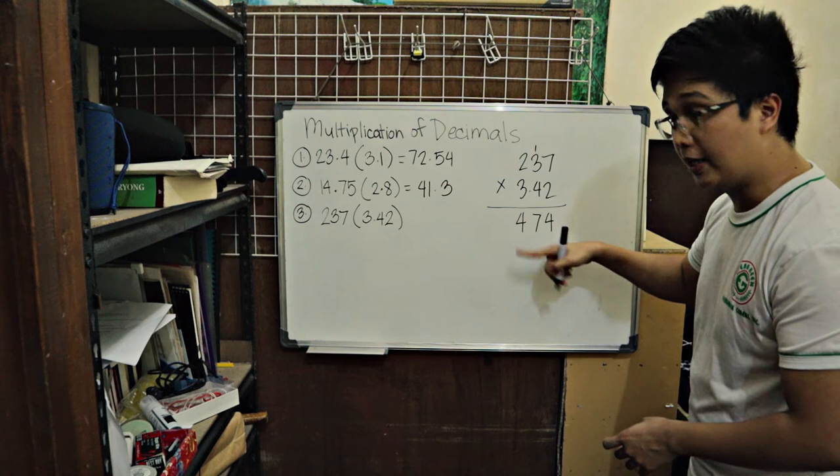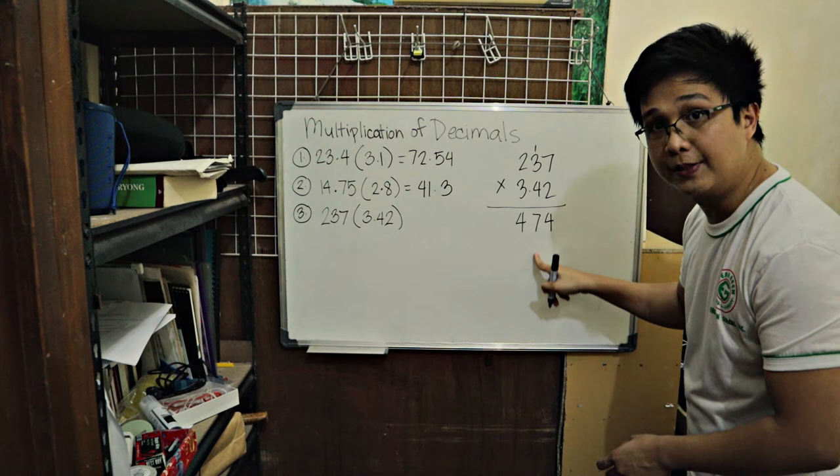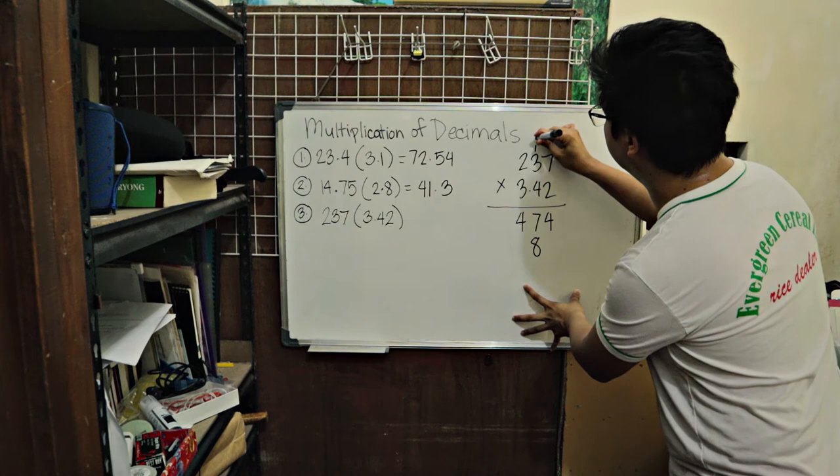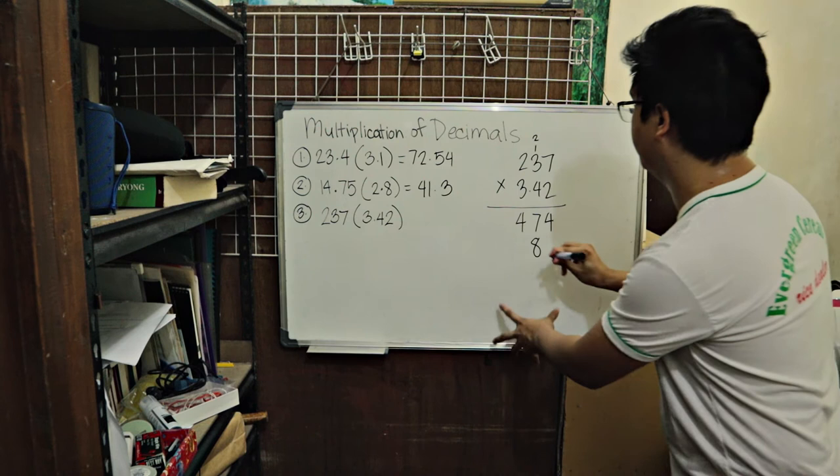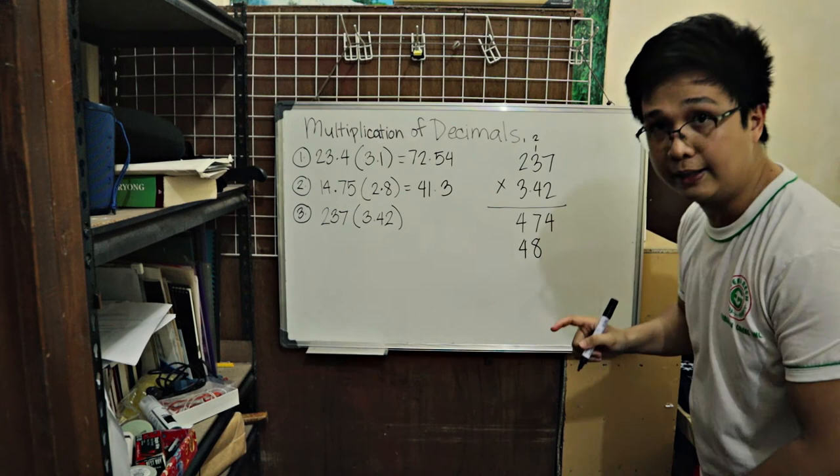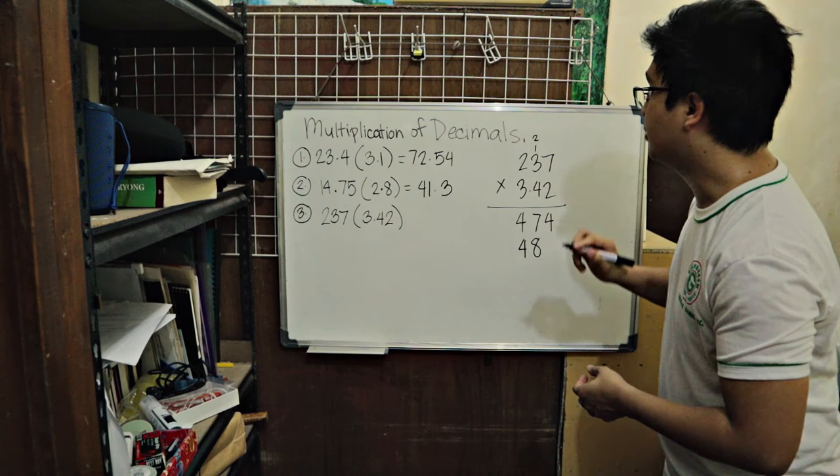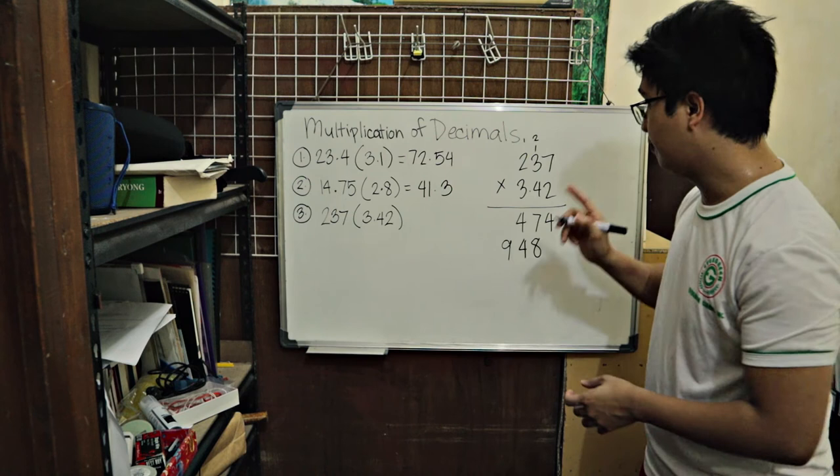4, ignoring the decimal point, is in the tens place. So the answer should start sa tens place. So 4 times 7 is 28. Carry 2. Ibutang sa babaw. 4 times 3 is 12. Plus 2 is 14. So 4. Carry 1. 4 times 2 is 8. Plus 1 is 9.